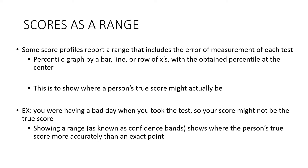Scores as a range: some profiles report a range that includes the error of measurement for each test, graphed as a bar or row of x's with the obtained percentile at center — this shows where a person's true score might actually be. For instance, if someone scores 74 on a test, a bar might show their true score ranges from 70 to 85, because we don't know if they were having a bad day or were distracted.